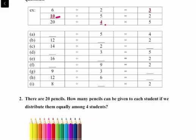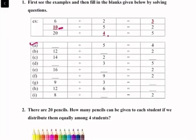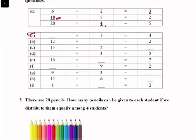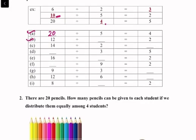So let's start. (a) blank divided by 5 is equal to 4 — the answer is 5 into 4 = 20. (b) 12 divided by blank is equal to 2 — the answer is 12 divided by 2 = 6, so 12 divided by 6 = 2.